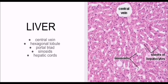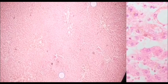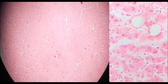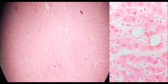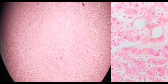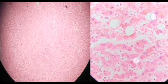Now I have another picture at 10x magnification. At 10x, the liver slide will look like this. You have to search for the central vein — this is a central vein, this is a central vein — you can see them in this hexagonal lobule. This is a central vein, this is a central vein, this is a central vein.